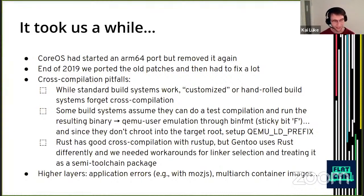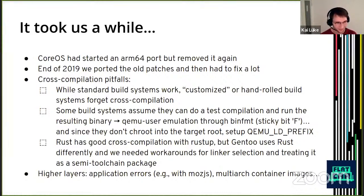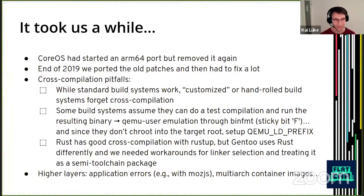Another issue: while Rust has a good cross-compilation setup with rustup, things are different with Gentoo, and we had to make changes to the ebuild files — finding the right linker and using the right linker arguments and so on. This is also related to our build system in general. We have an SDK from ChromiumOS — a workflow for building our image — and it has a separation between regular packages and toolchain packages like the GCC cross-compiler. Rust is somehow a mix of both, and that was also troublesome and a recurring theme.